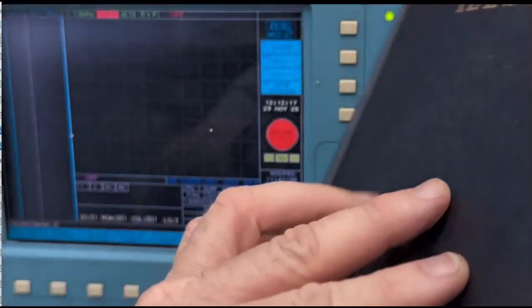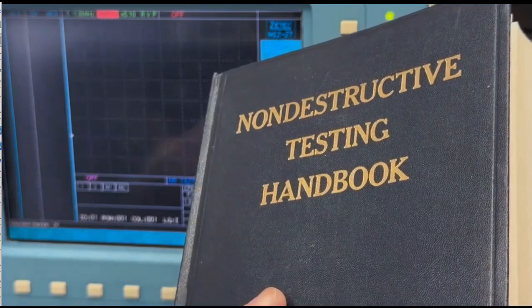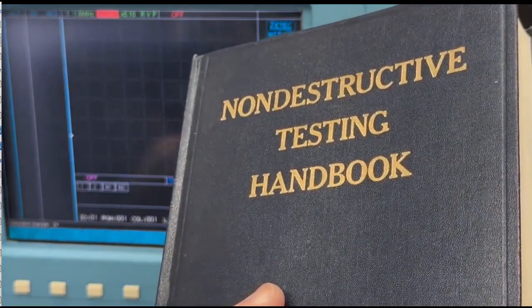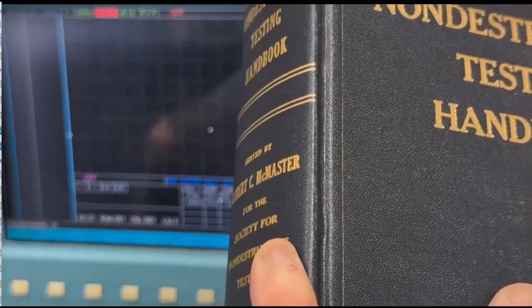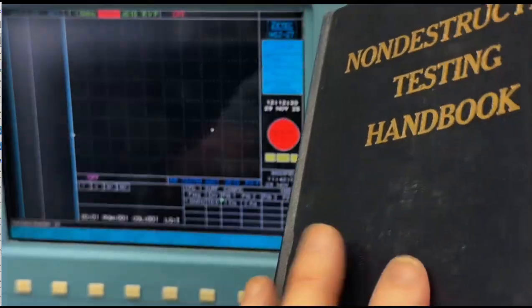So this is the 1959 NDT handbook, probably the best book on NDT ever written, edited by Robert McMaster. He's probably the biggest fan of non-destructive testing of anybody ever.